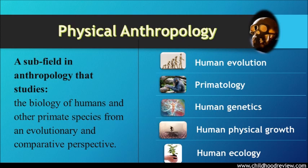Physical anthropology, also known as biological anthropology, studies the biological and behavioural aspects of human beings, their vanished ancestors, and related non-human primates, particularly with an evolutionary perspective. There are five subfields in physical anthropology. The first is human evolution — the study of the process of change from earlier ancestors to modern humans; study shows modern humans evolved over about 6 million years. The second is primatology, the study of non-human primates — mammals such as monkeys, apes, and humans — their behaviour, biology, and evolution.